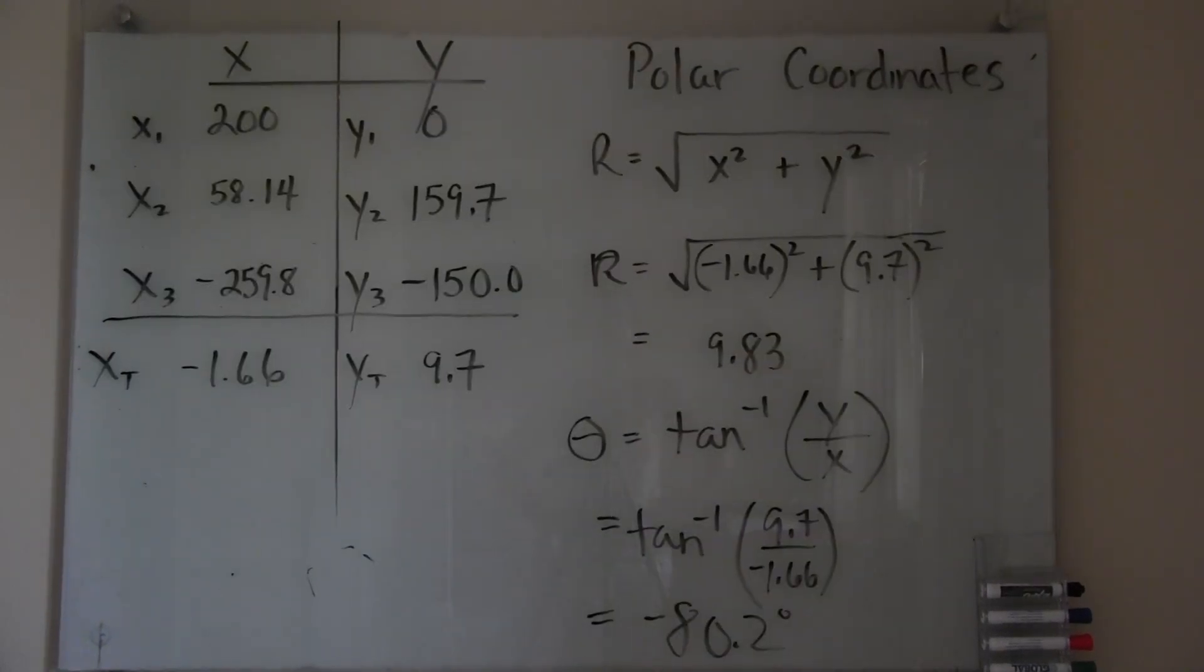Now we will interpret the data. On the left, you will see that I have listed the three x and y components in columns. On the bottom is their total. So I have added up each one and got a total for the x and y components. These are Cartesian coordinates. We will need to convert into polar coordinates.